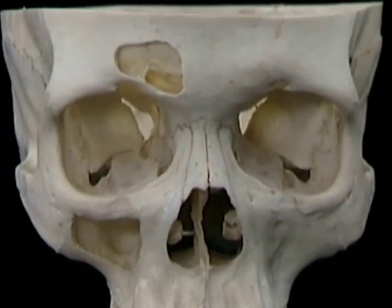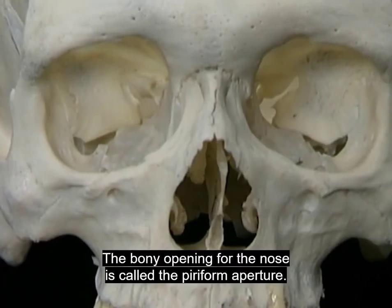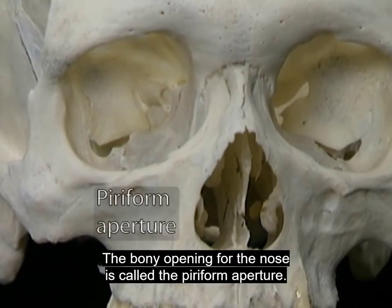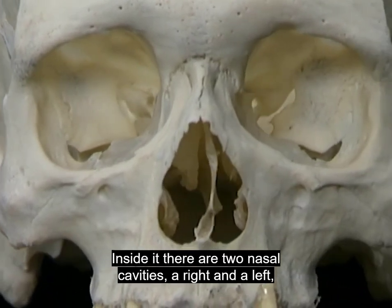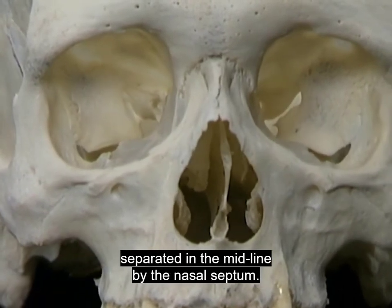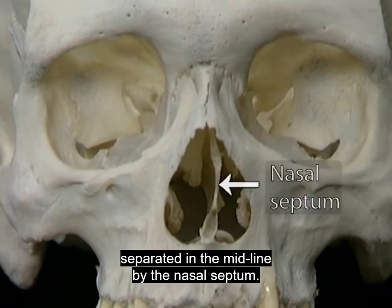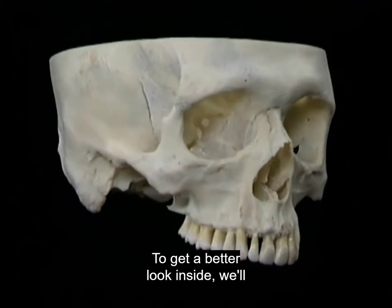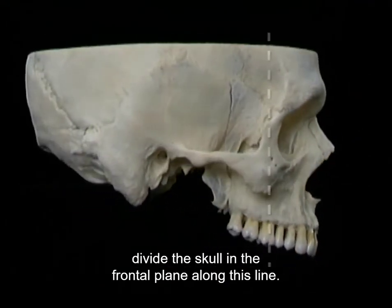In this section, we'll look at the upper part of the air passage. We'll look at the external nose, the nasal cavities, the paranasal sinuses, and the nasopharynx. We'll start by looking at the bony structures that surround these spaces. The bony opening for the nose is called the piriform aperture. Inside it, there are two nasal cavities, a right and a left, separated in the midline by the nasal septum. To get a better look inside, we'll divide the skull in the frontal plane along this line.